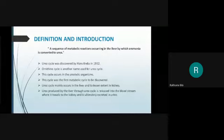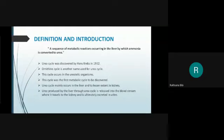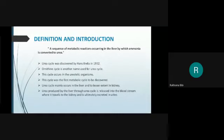The urea cycle takes place in liver cells — some steps occur in the liver mitochondria and some in the cytosol. The urea is produced in the liver, released into the bloodstream, then to the kidney, where it is concentrated into urine. There are two steps in the urea cycle which are in the mitochondria and the remaining steps are in the cytosol.